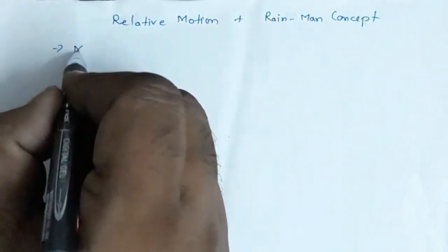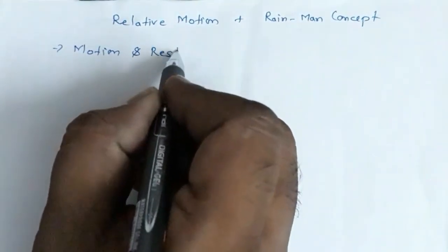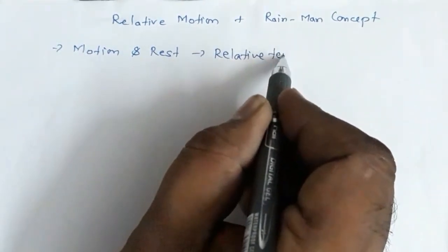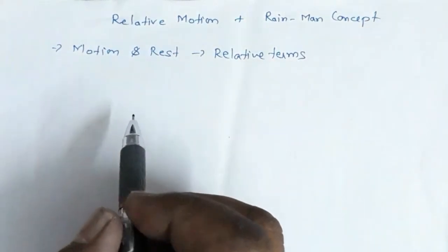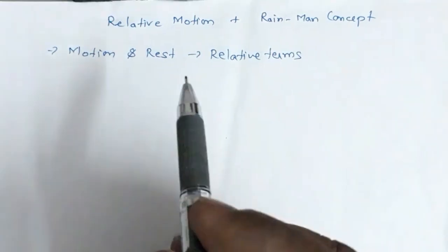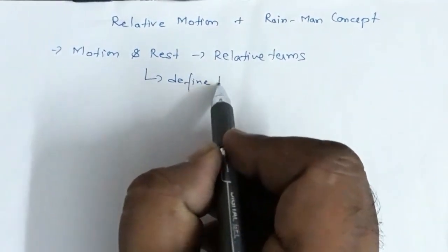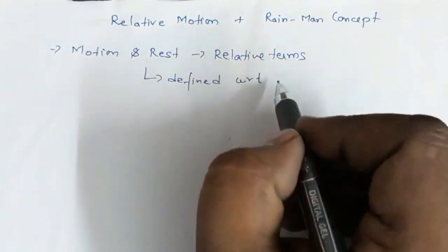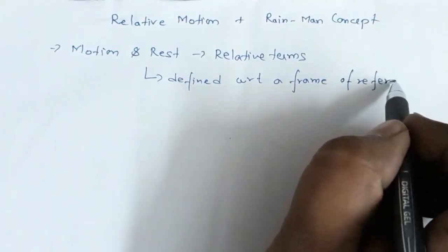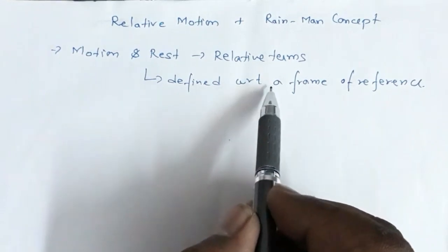Now, the terms motion and rest are relative terms. That means the state of motion or state of rest of a body is always defined with reference to a frame of reference. Motion and rest are defined with respect to a frame of reference.